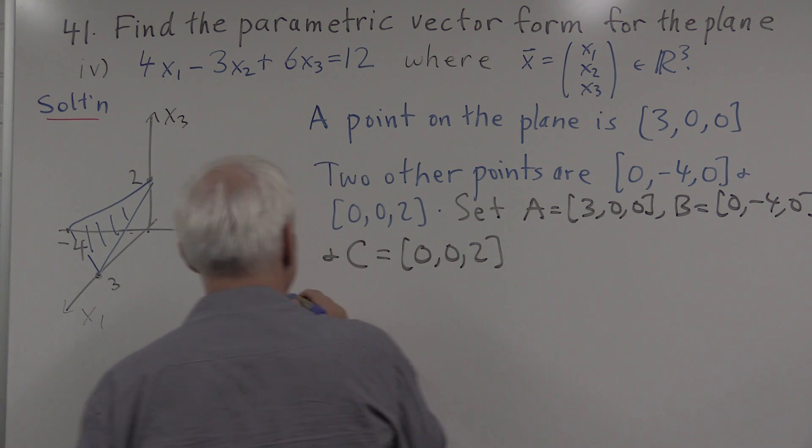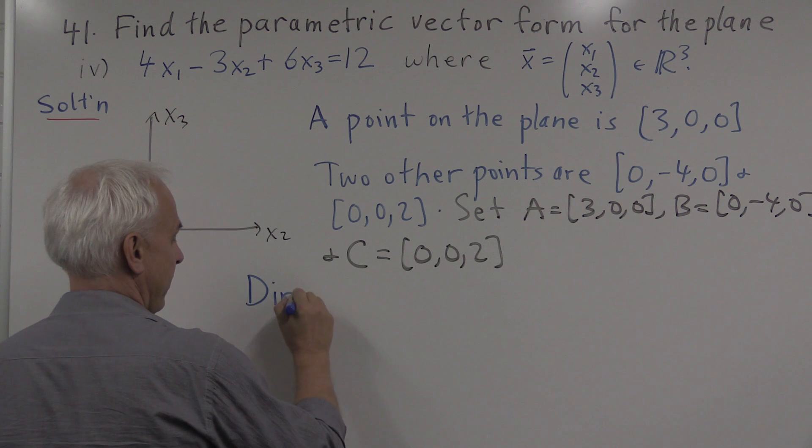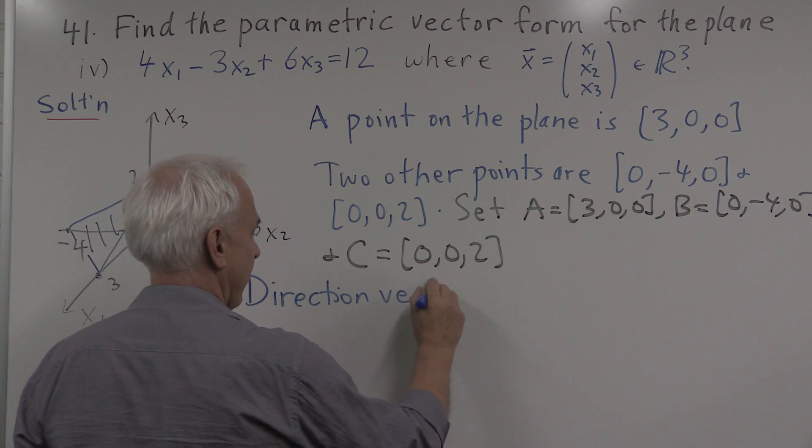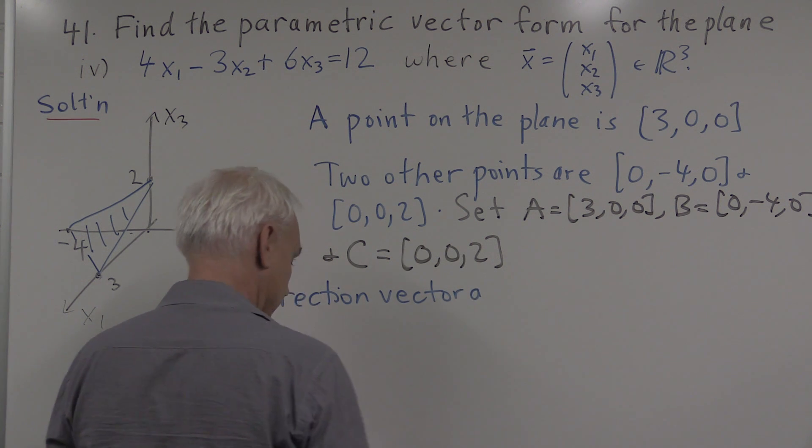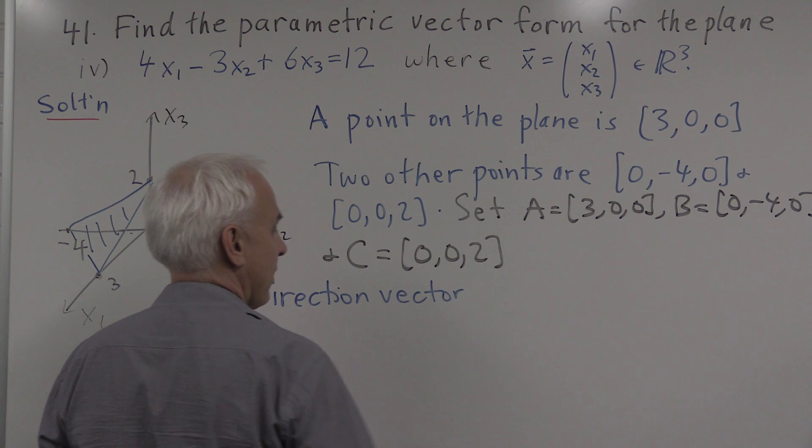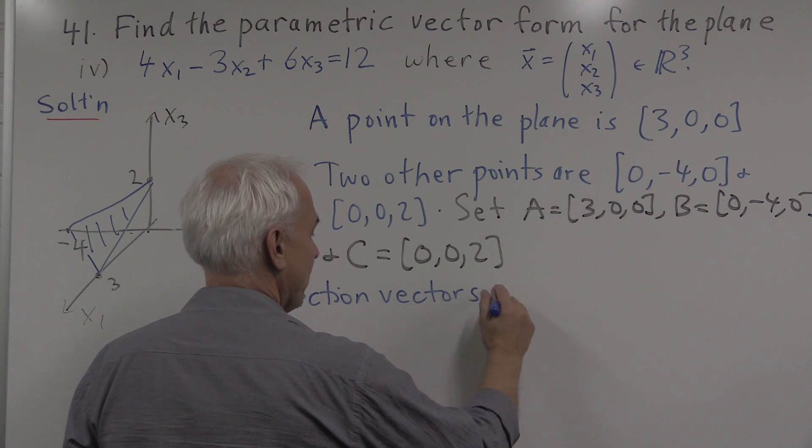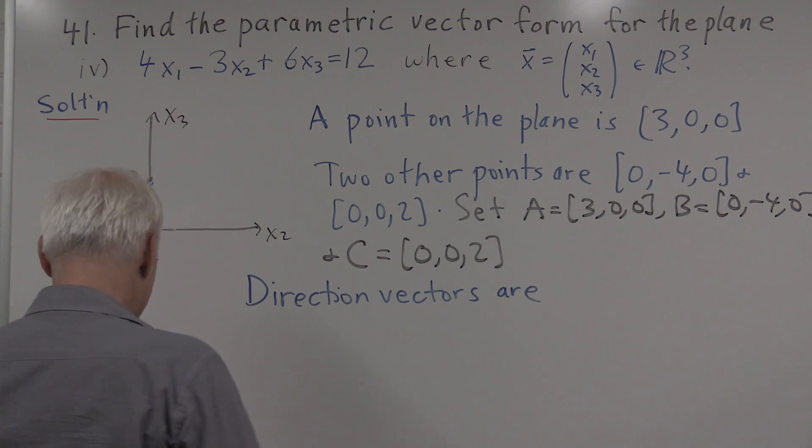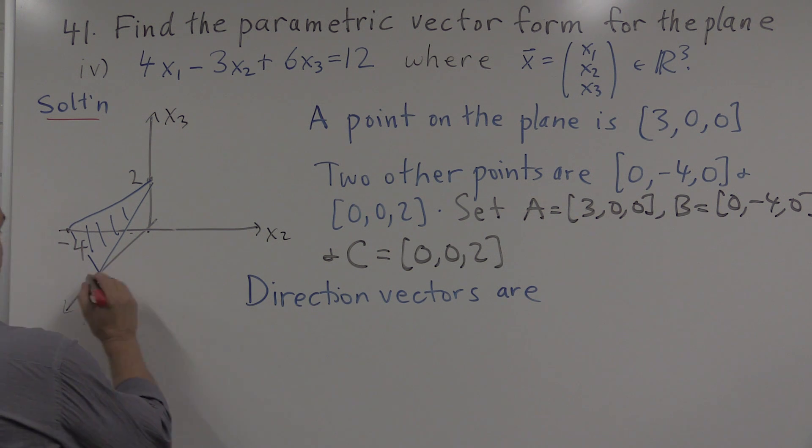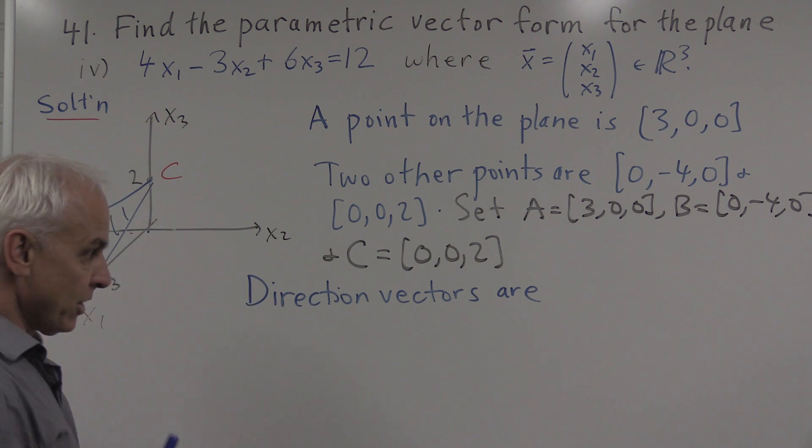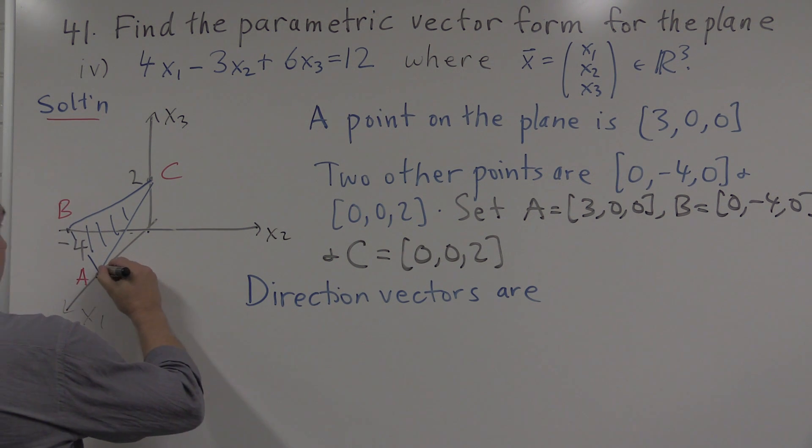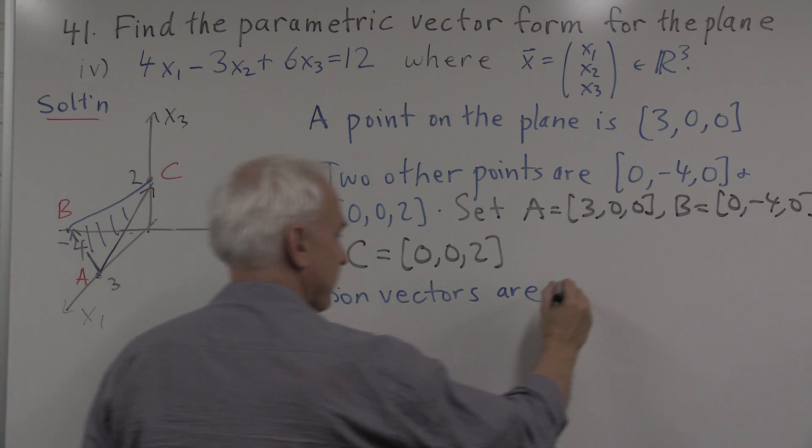Then direction vectors for the plane are, well, one of them would be, for example, first of all, these points are A, B, and C. So some direction vectors would be the vector AC and the vector AB, for example.